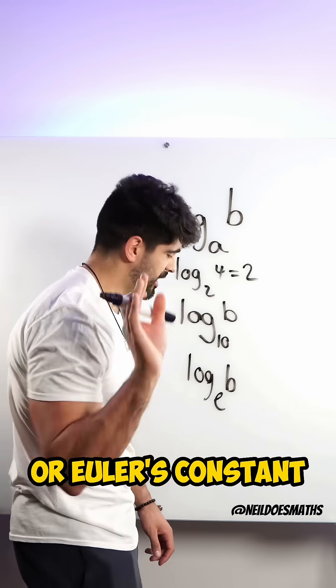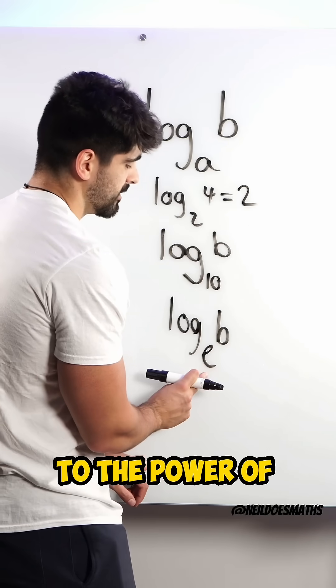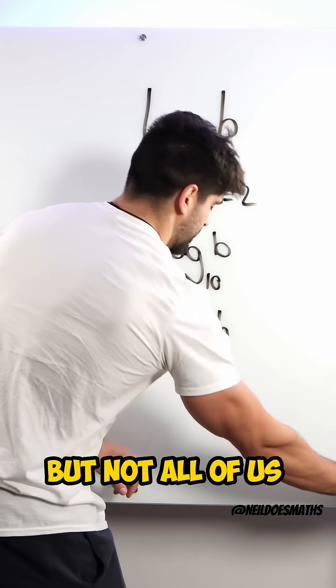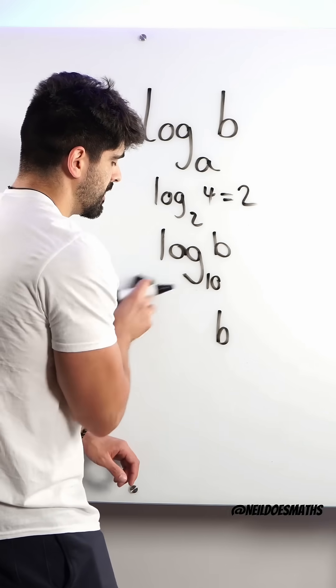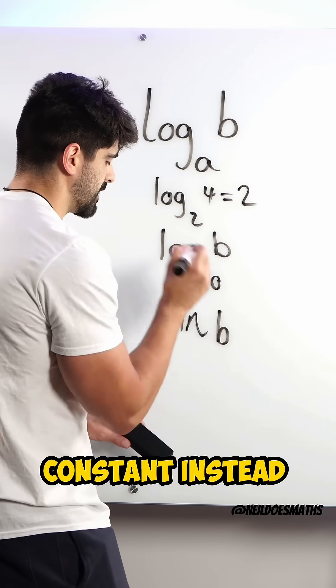E, Euler's constant, however you want to say it. So it's saying e to the power of what is b. But not all of us want to keep saying log base e. It's a natural constant. Instead, we say ln.